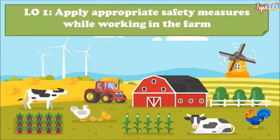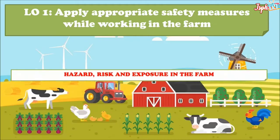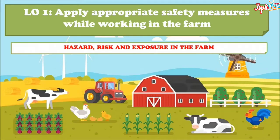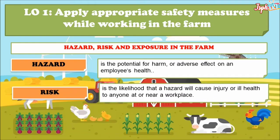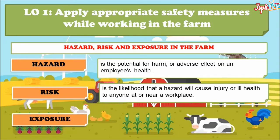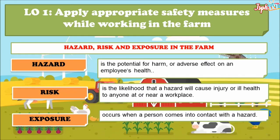Learning Outcome 1: Apply Appropriate Safety Measures While Working in the Farm. Hazard, Risk, and Exposure in the Farm. Hazard is the potential for harm or adverse effect on an employee's health. Risk is the likelihood that a hazard would cause injury or health issues to anyone at or near a workplace. Exposure occurs when a person comes into contact with a hazard.